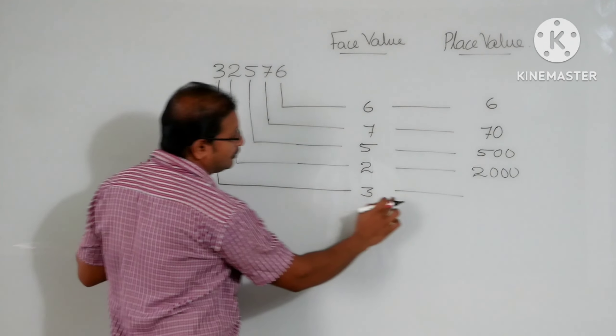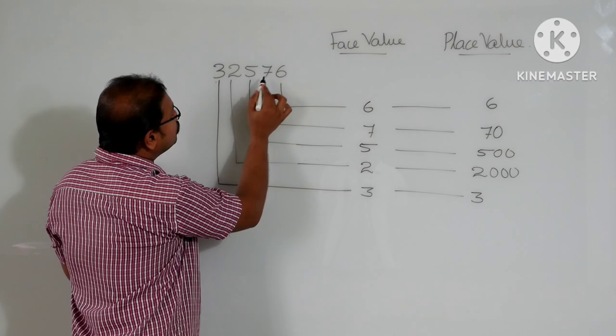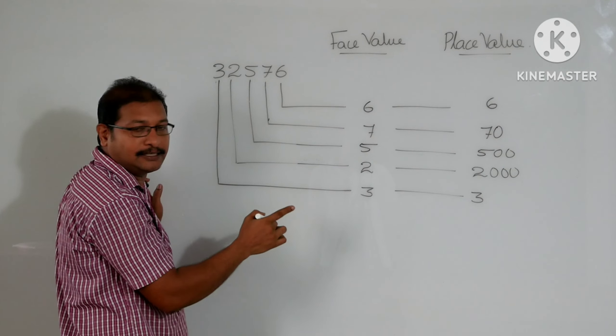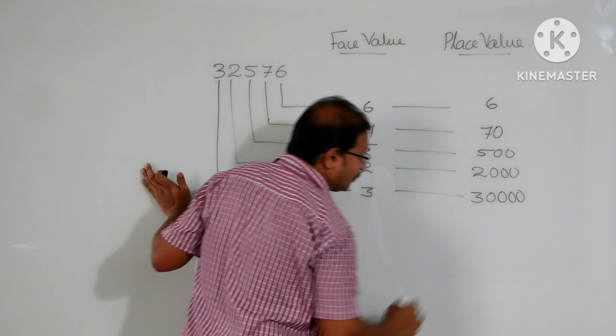Next one, 3. First I will write 3. After that, 1, 2, 3, 4 digits are there. Isn't it? That means we are going to write 1, 2, 3, 4, 0's. I hope you understood.